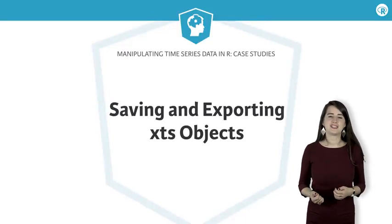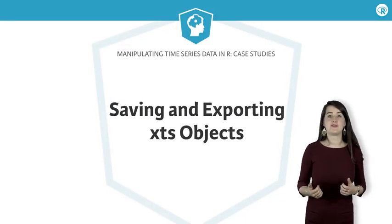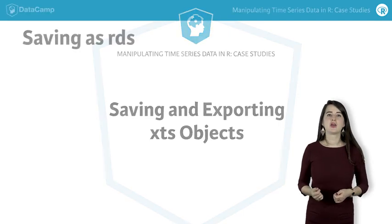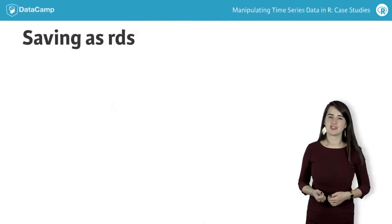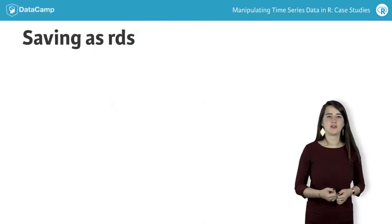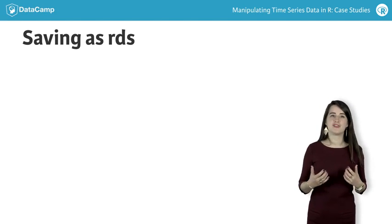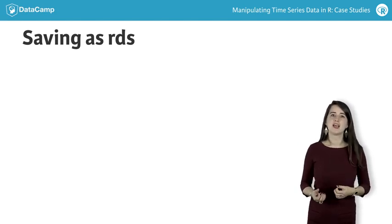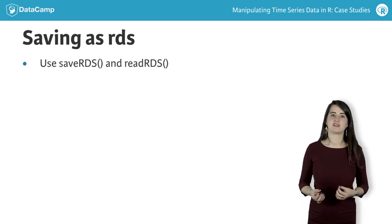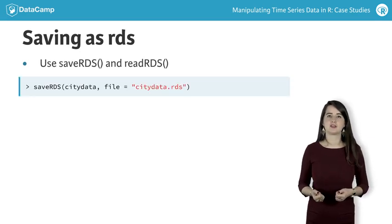Another basic task in time series manipulation is to save your data. We'll cover two options for saving time series data in R. First, the most efficient and reliable way to store your XTS objects is to save them as RDS files using the saveRDS command.